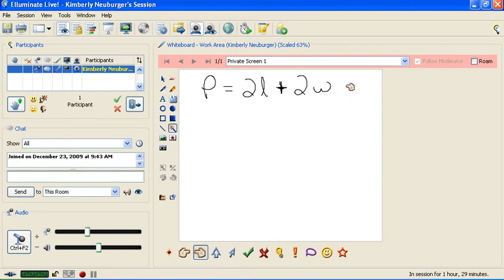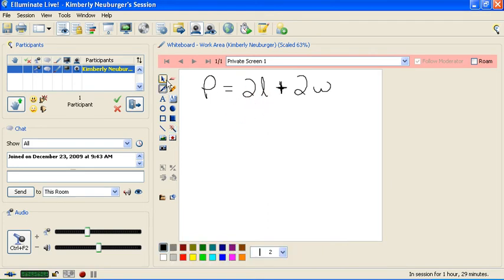So we're going to take this equation here, and we're going to solve for the W. First thing we need to do is move the things being added to the term with the W away from it. And we're adding a 2L. To move that to the other side, we would need to add the opposite, which is a negative 2L. So we're going to subtract 2L